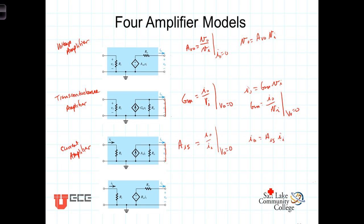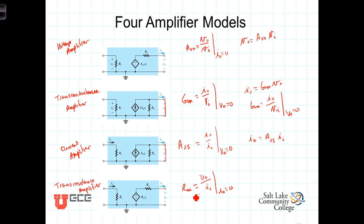Our final and fourth model is known as a transresistance amplifier, where its unloaded gain term R sub m is defined as Vout over Iin, evaluated at Iout equals 0. This Iout equals 0 condition means the output is open-circuited, so this is the open-circuit gain term. The units of R sub m are volts per amp, which are the units of resistance — thus the name transresistance amplifier.